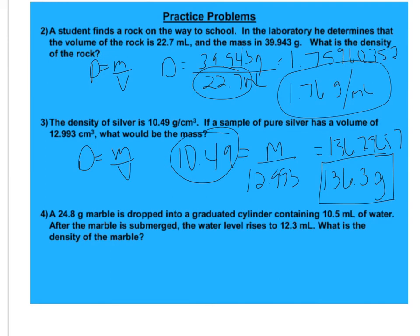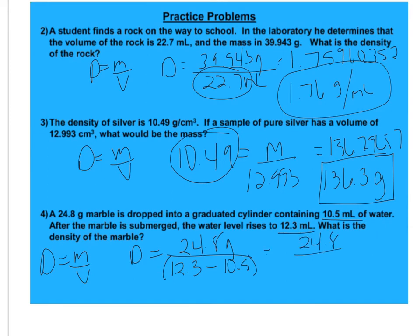A 24.8 gram marble is dropped into a graduated cylinder containing 10.5 milliliters of water. After the marble is submerged, the water level rises to 12.3 milliliters. So what is the density of the marble? So same equation, density is the mass over volume. I don't know density, I know my mass is 24.8 grams. Now here I've dropped this rock in, and the water level has risen, so if I subtract my final water minus my initial water, it will tell me just the volume of the rock. So my final volume is 12.3 minus 10.5. So that is 24.8 divided by 1.8, and then that comes out to be 13.77778. I can only have 2 sig figs, so my answer is 14 grams per milliliter.